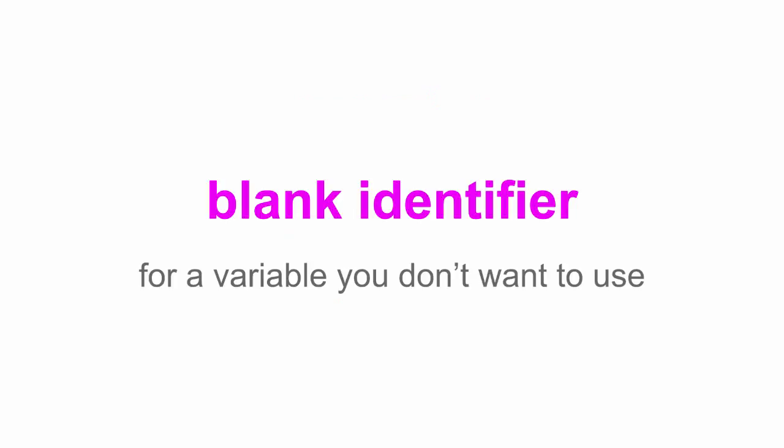Blank identifier — it's for a variable you don't want to use. If you have a variable and you don't use it in Go, that's an error. It's just like, hey, why is this variable here? You're not using it. Error. So if there's ever something where I need that there but I'm not going to use it, you put a blank space — an underscore — in for the variable name. Right here, that's invalid code: I've declared and initialized C, and C is not being used.